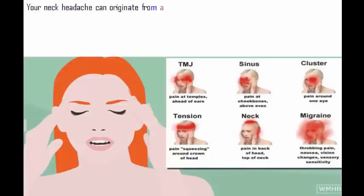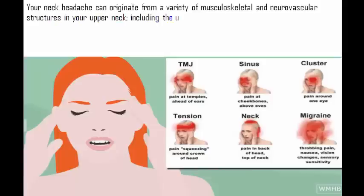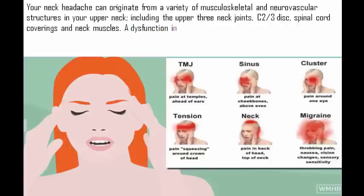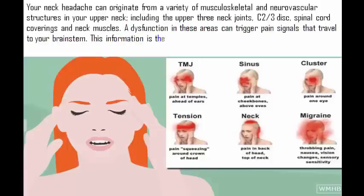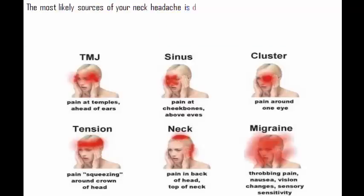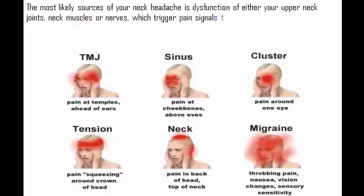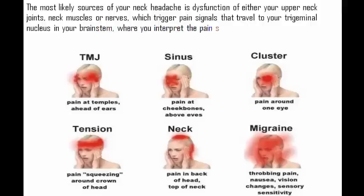Your neck headache can originate from a variety of musculoskeletal and neurovascular structures in your upper neck, including the upper three neck joints, C2/C3 disc, spinal cord coverings, and neck muscles. A dysfunction in these areas can trigger pain signals that travel to your brain stem, which is then transmitted into your brain and interpreted as a headache. The most likely sources are dysfunction of either your upper neck joints, neck muscles, or nerves, which trigger pain signals that travel to your trigeminal nucleus in your brain stem.